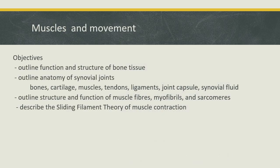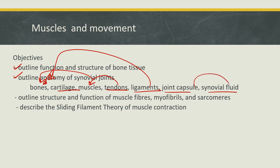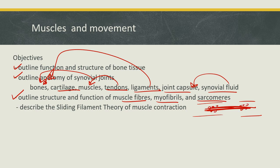And we did it — we achieved all of our objectives. We outlined the function and structure of bone tissue and talked about the anatomy of synovial joints. We know tendons connect muscles to bones and ligaments connect bones to other bones. There's cartilage, joint capsules, and synovial fluid in the joints to help prevent bone scraping against bone. We outlined the structure and function of muscle fibers: fibers are made up of myofibrils, myofibrils are made up of sarcomeres, and sarcomeres are made up of thick myosin filaments with heads and thin actin filaments associated with troponin and tropomyosin. We then talked about the sliding filament theory of muscle contraction, where myosin heads bind to the actin and slide it toward the M line. Good work today.